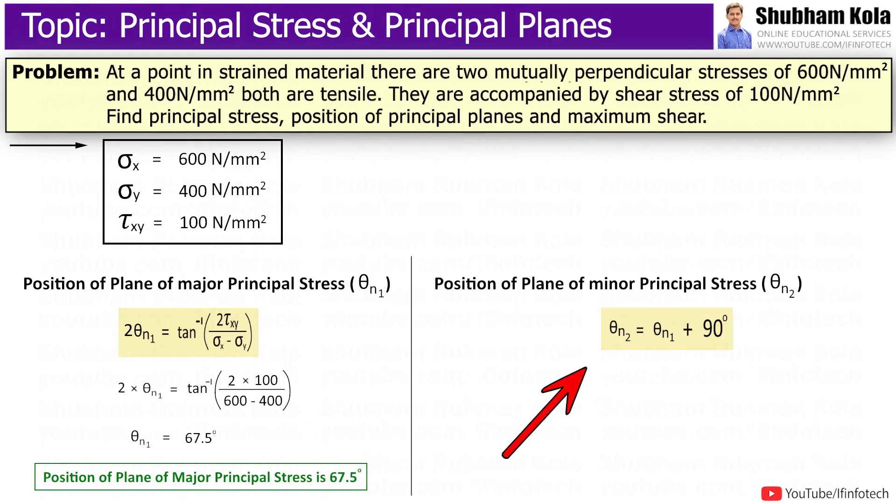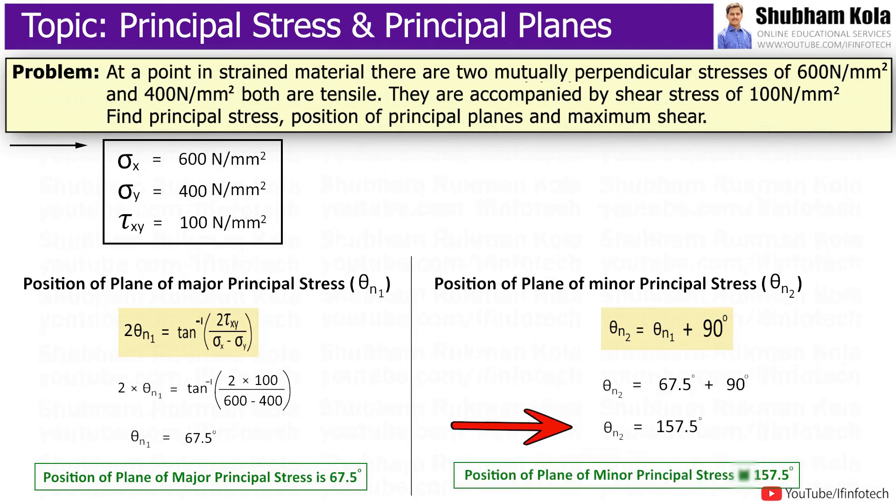And theta_n2 is equal to theta_n1 plus 90 degrees. So I will get position of plane of minor principal stress, that is theta_n2 will be 157.5 degrees.